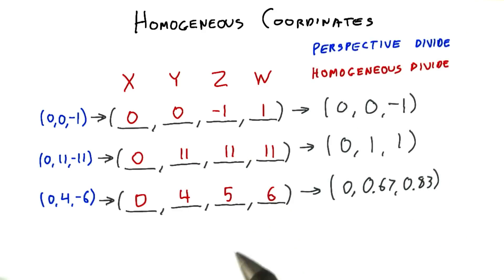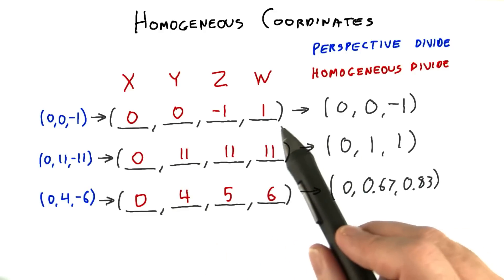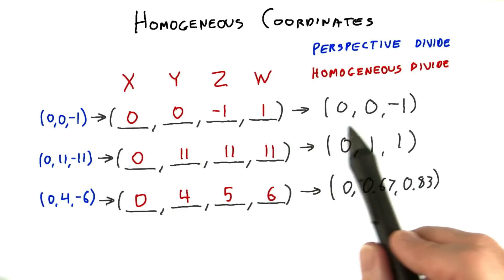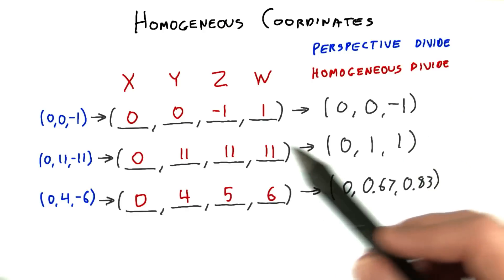So, for our three test points, we had a value such as 0, 0, negative 1, 1. Dividing by 1 is simple enough. That gives us 0, 0, negative 1. We don't need to bother writing out the w value in the result, since w divided by w will always equal 1.